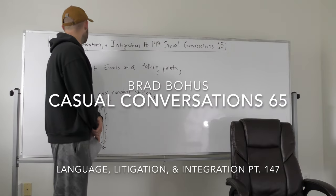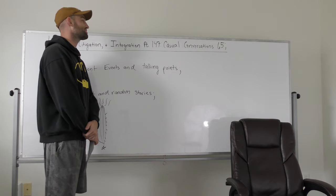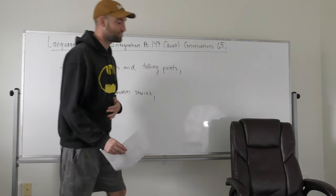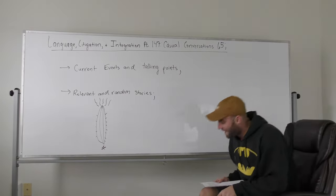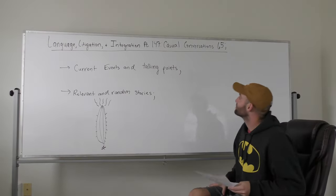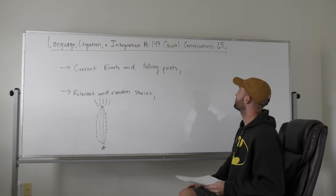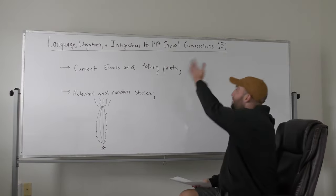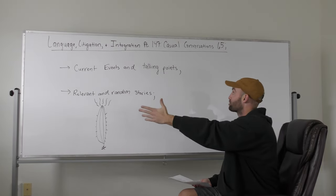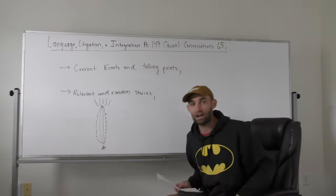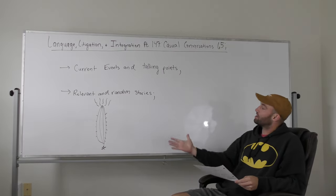What's up everybody? Welcome back to another episode of Language Litigation and Integration, Part 147, Casual Conversation 65. Another one in my series, getting close to that magical number. For the Casual Conversation section, it's almost at 69. We passed 69 for the LLIS lecture series, so I forgot to call that out. I always have to celebrate 69, even though there's no 69 on the board.